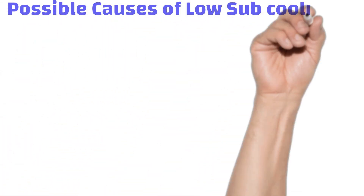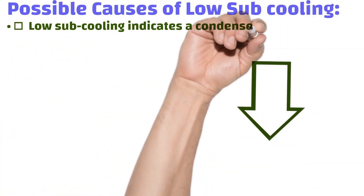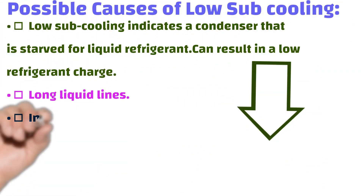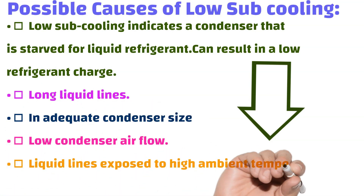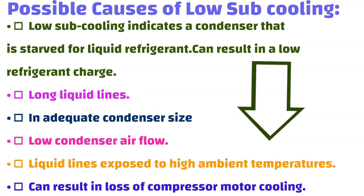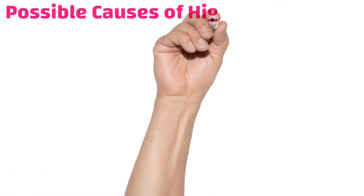Possible causes of low sub-cooling: one, low sub-cooling indicates a condenser starved for liquid refrigerant, which can result in a low refrigerant charge; two, long liquid lines; three, inadequate condenser size; four, low condenser airflow; five, liquid lines exposed to high ambient temperatures; six, can result in loss of compressor motor cooling.